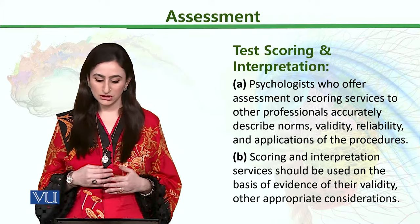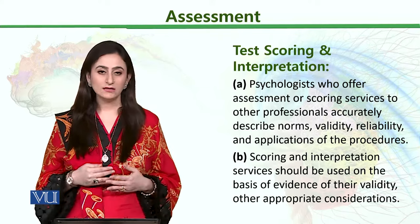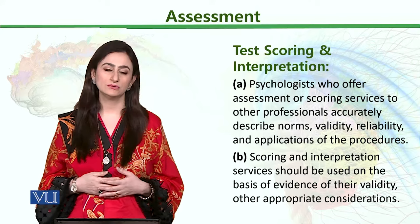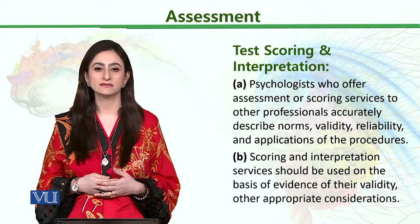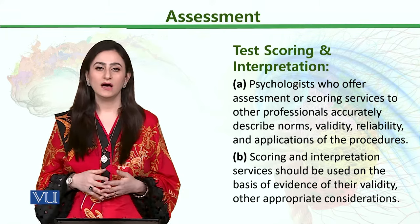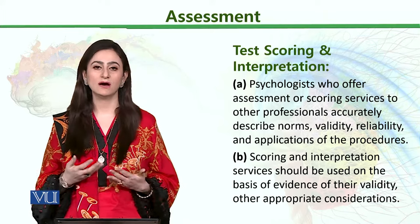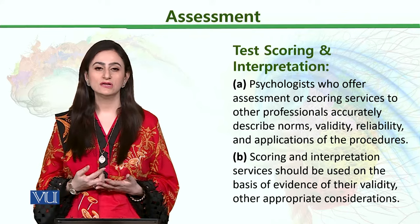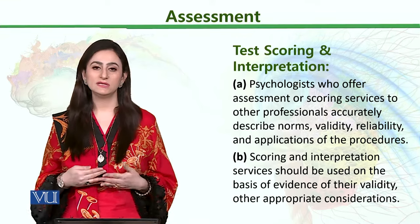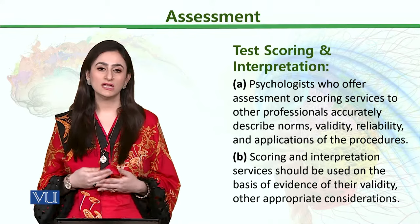Scoring and interpretation services should be used on the basis of evidence of their validity and other appropriate considerations. Whatever scoring manual is provided must be fully followed — we cannot interpret them according to our own preference. If any scoring has to be done on specific software — for example, a quality of life scale that needs to be scored on RAND — you must score it on RAND and can't score it manually if that provision is not given. Similarly, whatever domains are given for assessment, we need to fully follow them while scoring any questionnaire.